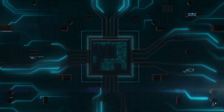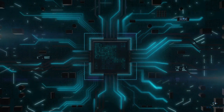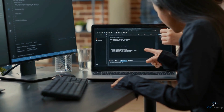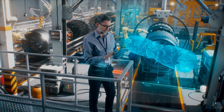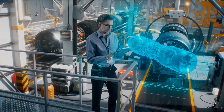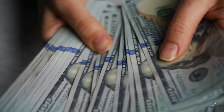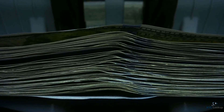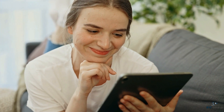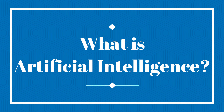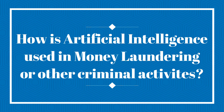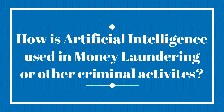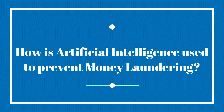In the age that we live in, artificial intelligence has been growing in popularity, and with the advances in technology, many more industries are using it in their everyday running of their businesses. With that being said, can artificial intelligence be used for money laundering? And if so, could it also be used to prevent money laundering? In today's video, we will be taking a look at what is artificial intelligence, how is artificial intelligence used in money laundering or other criminal activities, and how is artificial intelligence used to prevent money laundering.